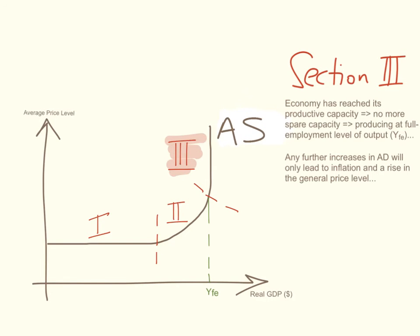Now what about section three? As you can see, this is the vertical section of the Keynesian aggregate supply curve — this is when the economy has reached full employment. Once the economy reaches its full employment level, it has reached its productive capacity and there is no more spare capacity. The economy is producing at YFE, the full employment level of output. Any further increases in aggregate demand at this point will only lead to inflation and a rise in the general price level.